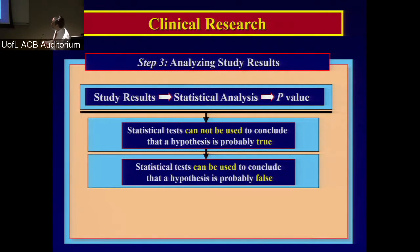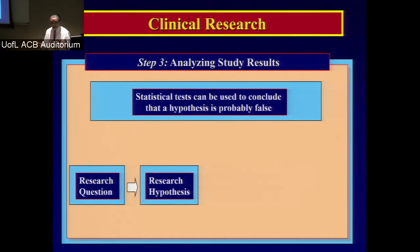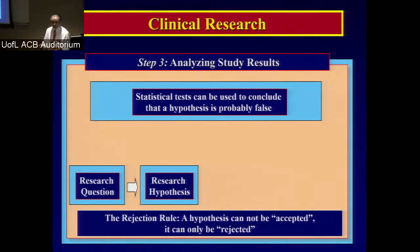Statistical tests cannot be used to conclude that a hypothesis is probably true. A statistical test can only be used to conclude that a hypothesis is probably false. A hypothesis can never be accepted — it can only be rejected. So we create a null hypothesis to give to the statistician. My research hypothesis is that this new antibiotic will decrease mortality in pneumonia. The null hypothesis is that this new antibiotic has nothing to do with mortality — no relationship. The statistician can play with the null hypothesis and potentially reject it, which is what we want.